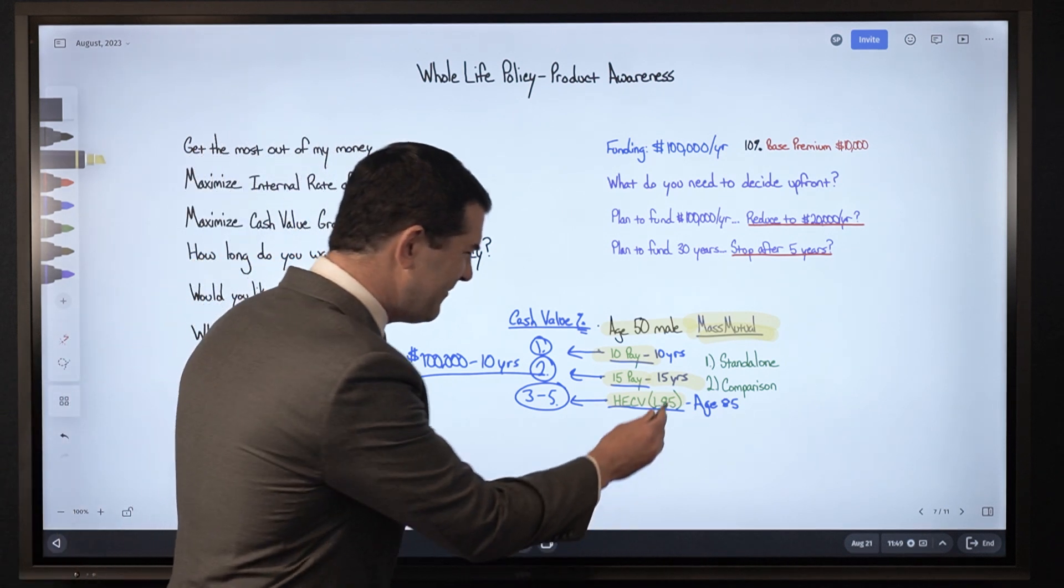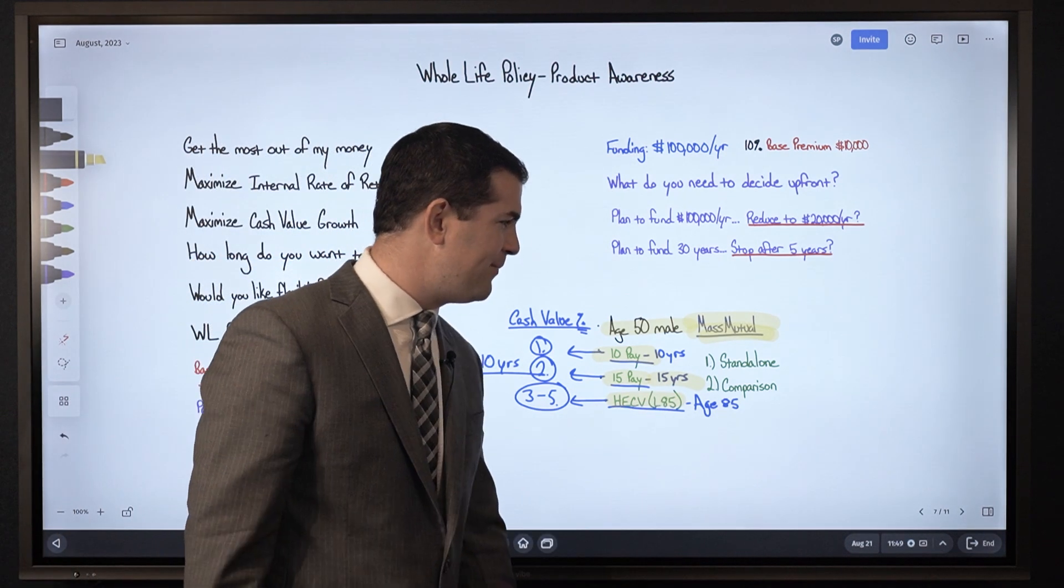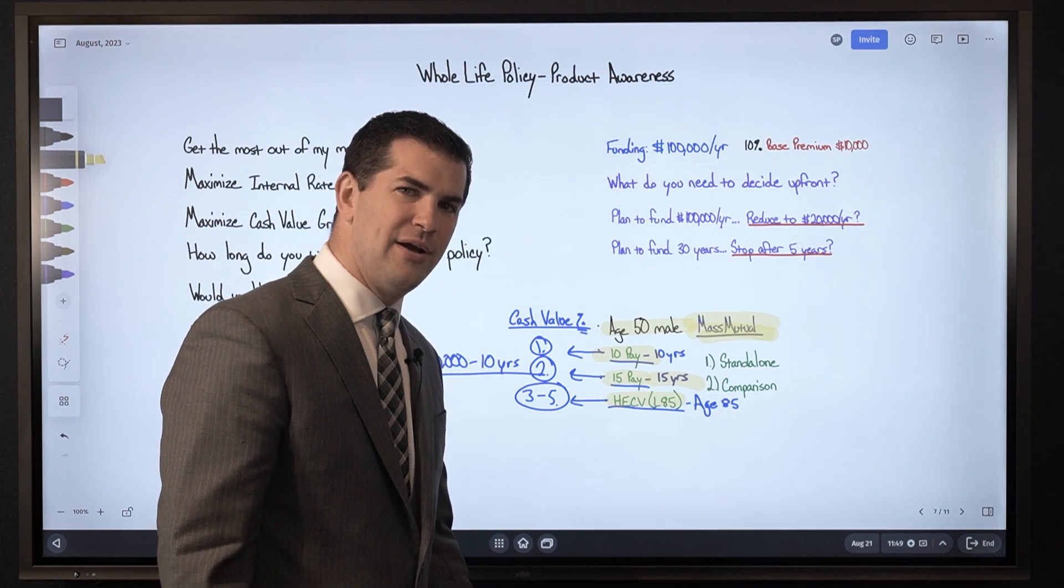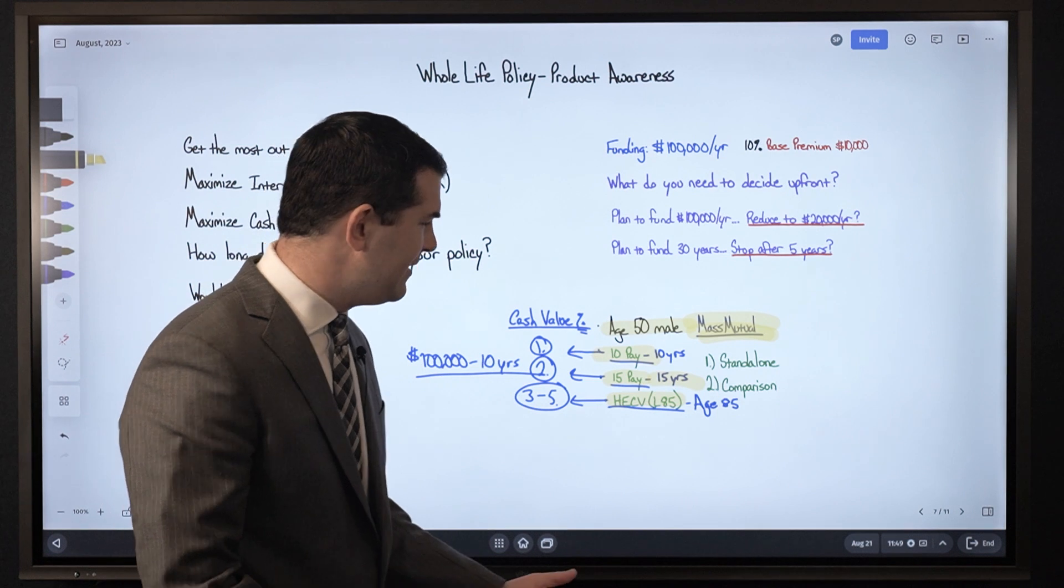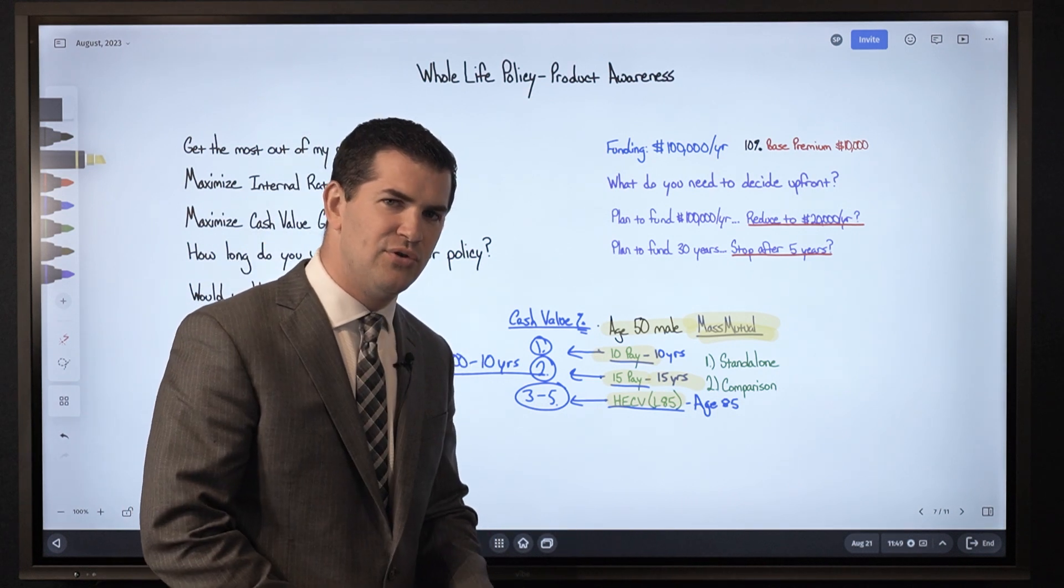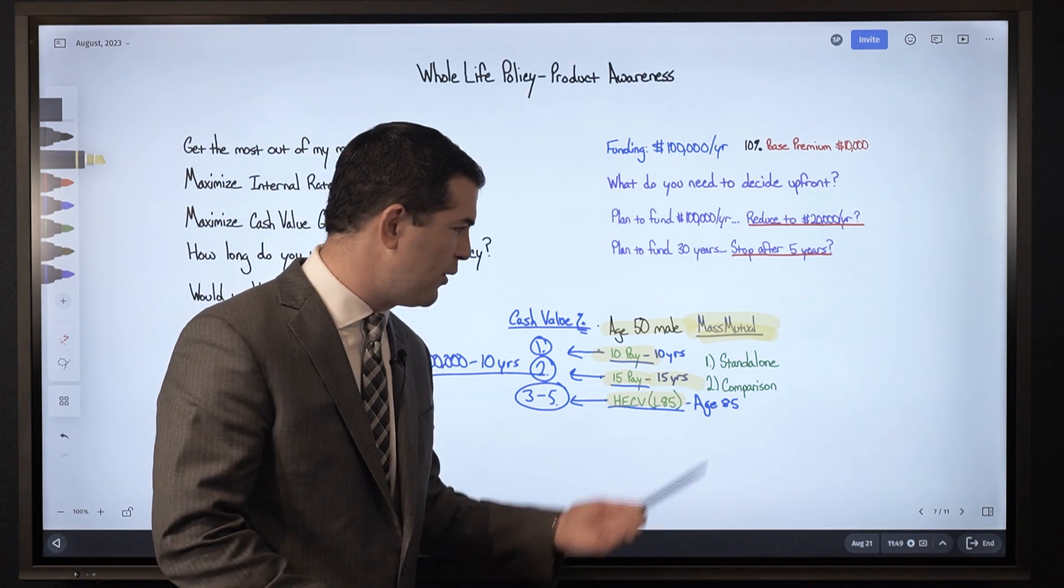If they say, you know what, 65 at that point in time, I'm going to be retired, I'm going to be taking income, I'm looking at phase two of my life - yeah, not longer than 15 years, but definitely longer than 10 going back to the 10 pay.